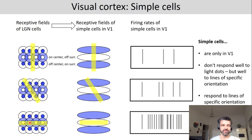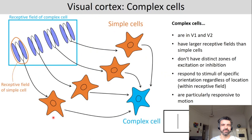Of course, there are excitatory and inhibitory zones. So if the light was presented in an off-center on-surround configuration, it would inhibit the activation. So these are the simplest cells in the visual cortex.